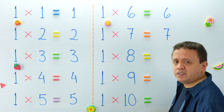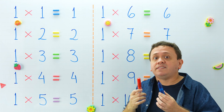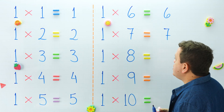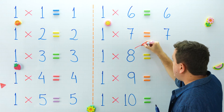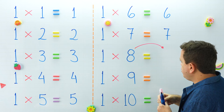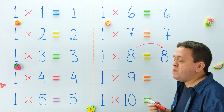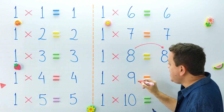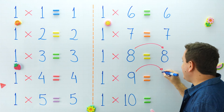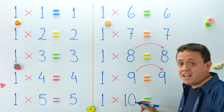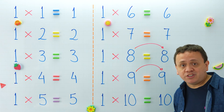This multiplication table is so easy, isn't it? Well, we have to remember a property. The product of 1 and any number is that number. Once again, the product of 1 and any number is that number. For example, 1 times 8 equals 8. 1 times 9 equals — remember, the product of 1 and any number is that number — 1 times 9 equals 9. Finally, 1 times 10 equals 10. And we finish with our first multiplication table.